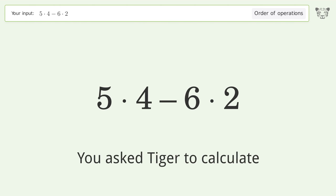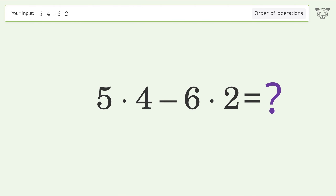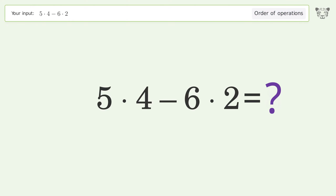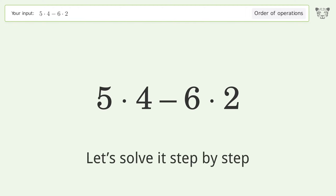You asked Tiger to calculate. This deals with the order of operations. The final result is 8. Let's solve it step by step.